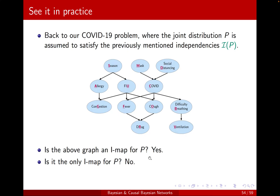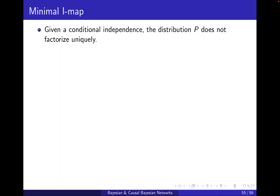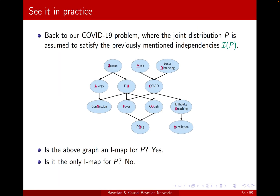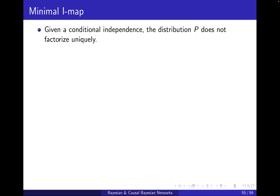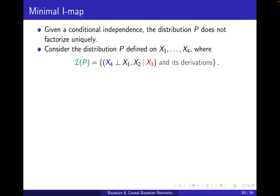We saw that it's not the only IMAP. Now the question is, since there can be several IMAPs, can we somehow define a minimal IMAP? Let's see an example. Given a conditional independence, the distribution P does not factorize uniquely — we already know that.